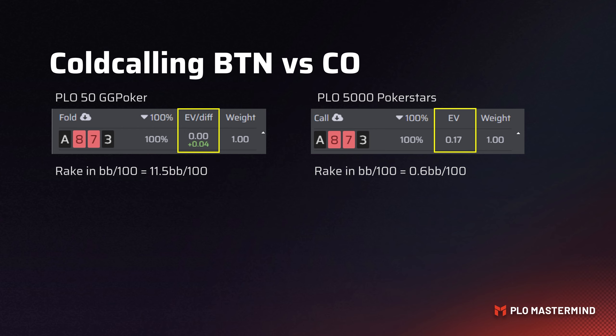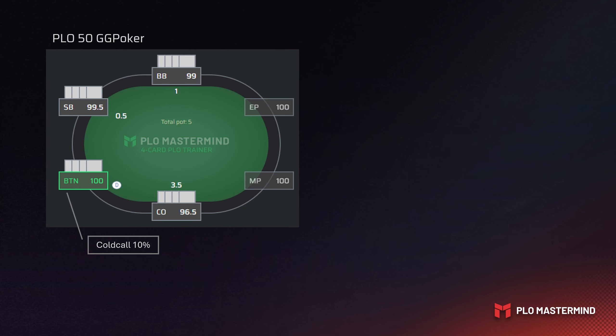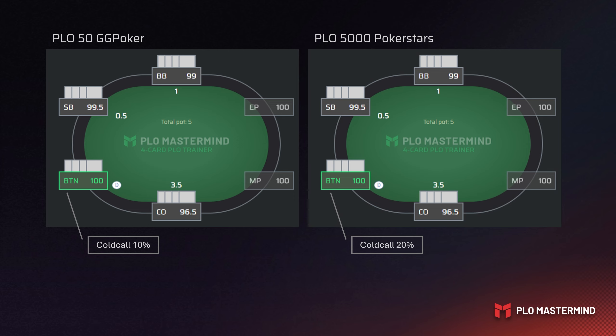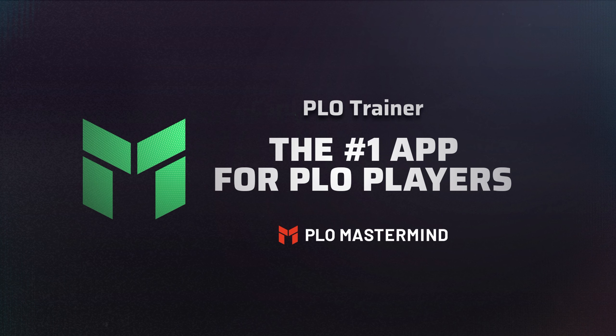At the lower rake it shows a profit of 0.17 big blinds, or 17 big blinds per 100. This illustrates the point that when rake is lower you can call a lot more hands. You want to train and study with the right rake structure preflop. The EV difference feature also shows which hands are fringe hands and can be added against weaker opponents when you want to expand your range.